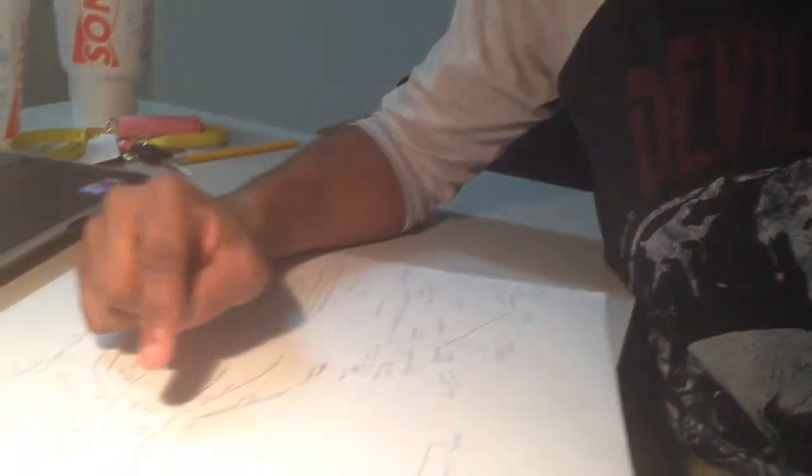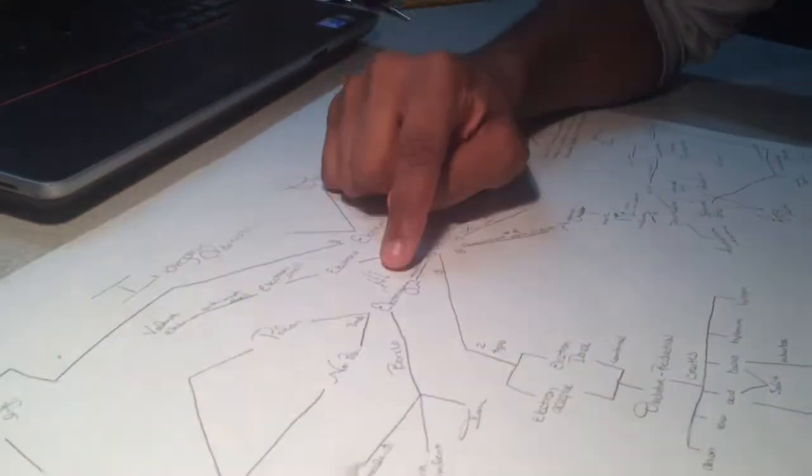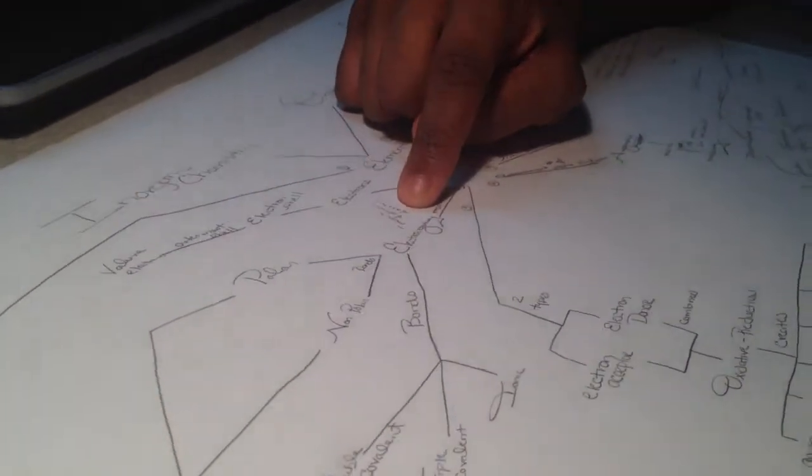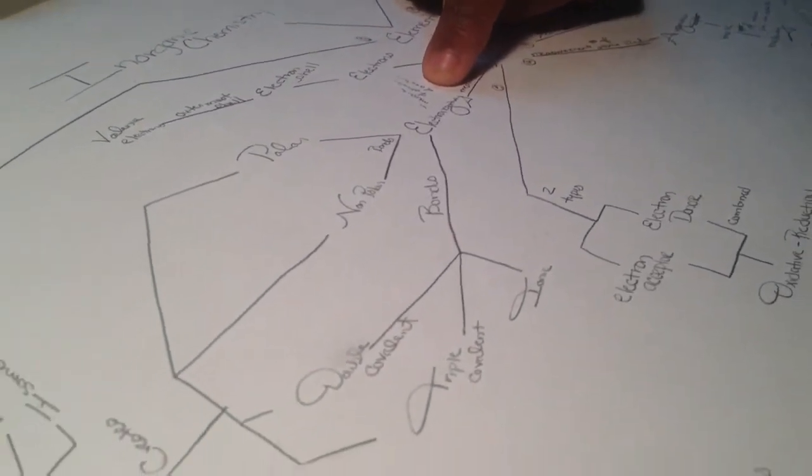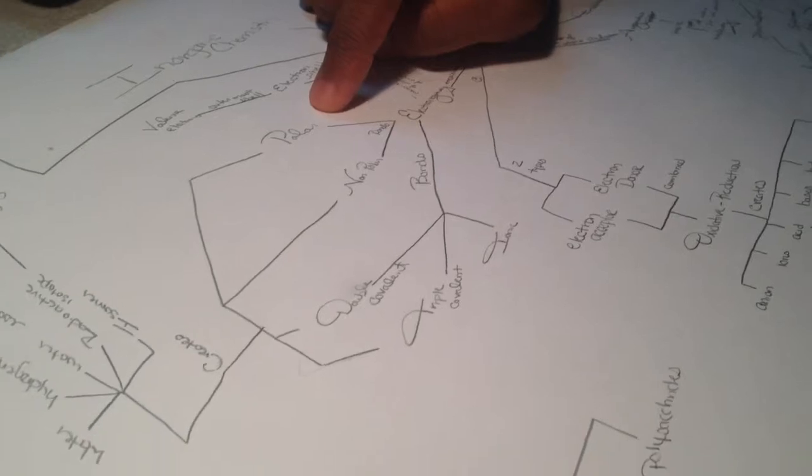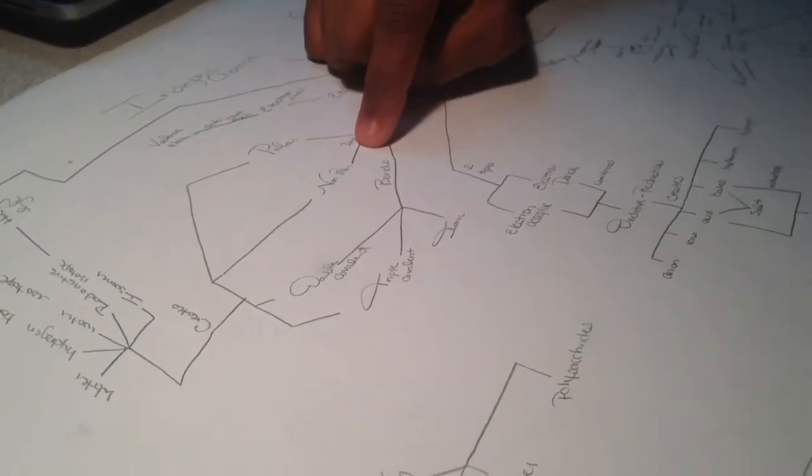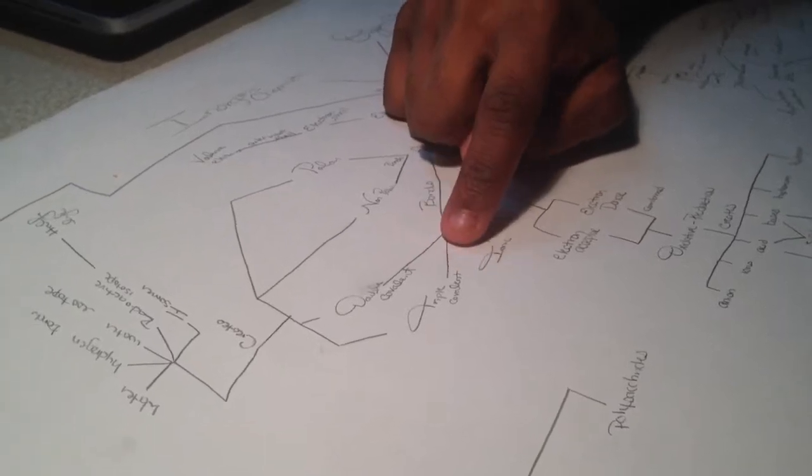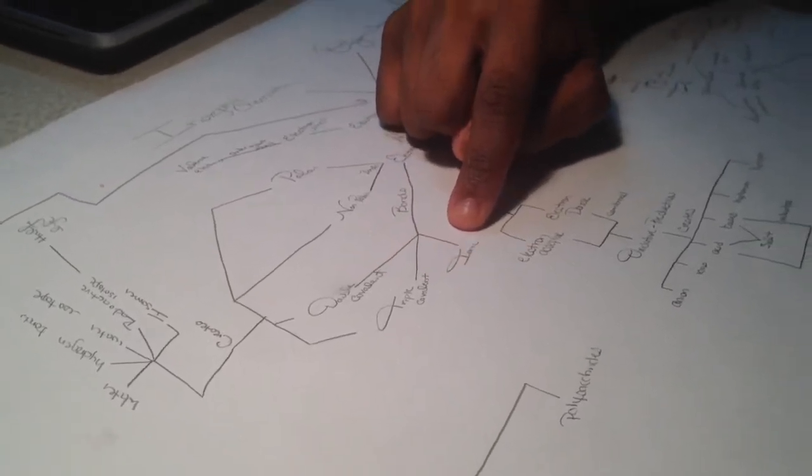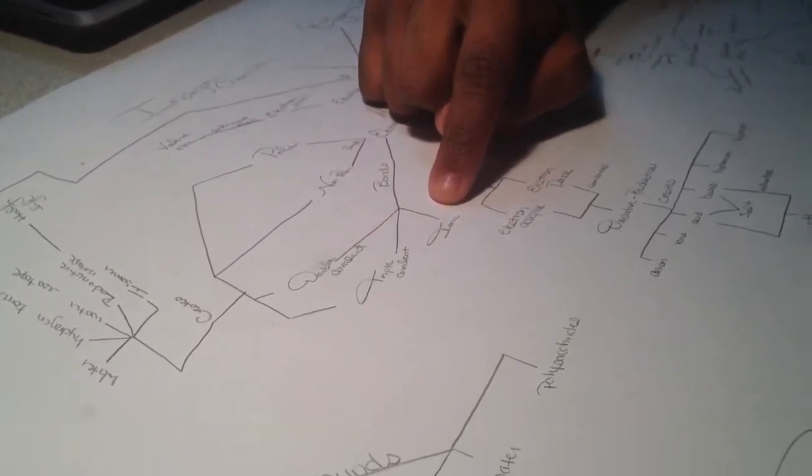You go on to the measure of attraction of an atom, which is electronegativity. Those go to different bonds which are based on their electronegativities: polar bonds, nonpolar bonds. You also have other types of bonds like double covalent, triple covalent, and ionic.